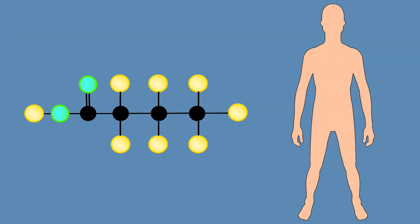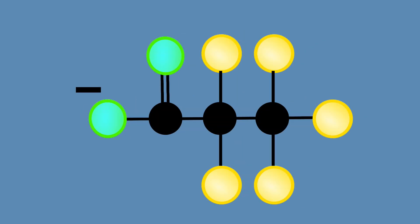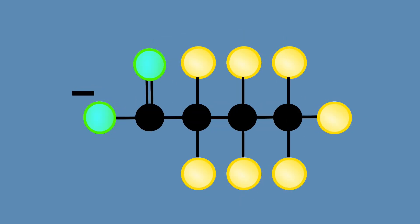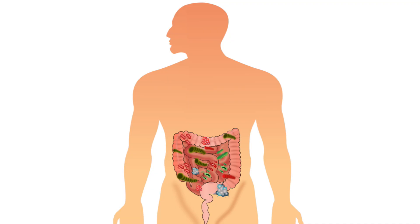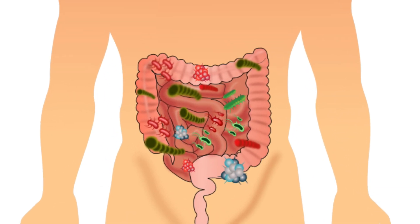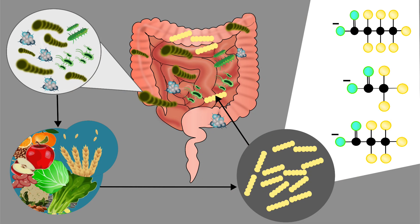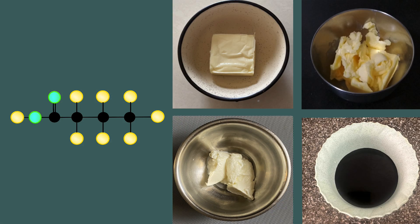Short chain fatty acids are produced by our body. Acetate, propionate and butyrate are some of the short chain fatty acids. These are produced by bacteria in the large intestine. The bacteria in our intestine ferments the indigestible fiber, leading to production of short chain fatty acids.